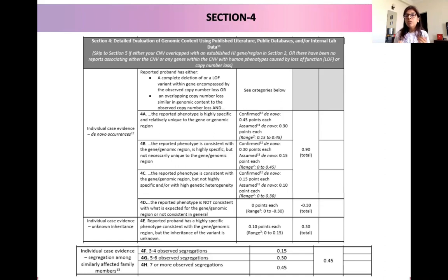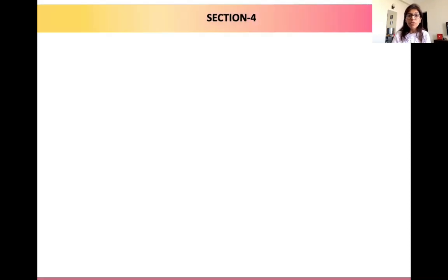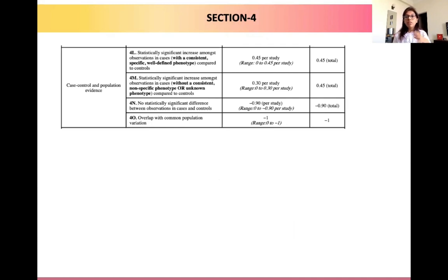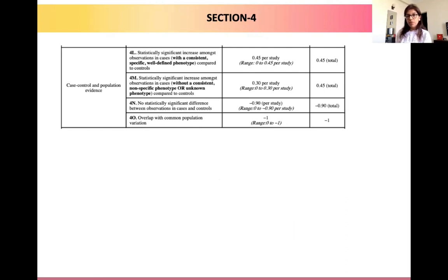Apart from these case evidences, there could also be reports with case-control comparisons, and population evidence of the CNV being either benign or pathogenic. A general rule we follow for both SNPs and CNVs is that if a CNV is present in greater than one percent of a population, we consider it a polymorphism and downgrade it to the benign category. Only if it is present in less than one percent of a population do we consider it a rare CNV and classify it towards the pathogenic side.